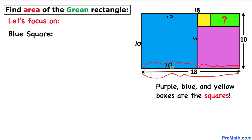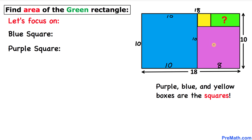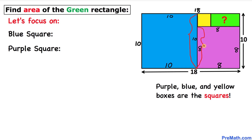Now let's focus on the purple square. Since all its sides are equal and this side is 8 units, all sides of the purple square are 8 units. We can see that the whole side length here is 10 and this portion is 8, so the remaining length is 10 minus 8, which equals 2 units.